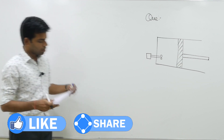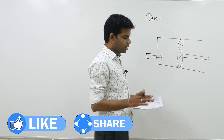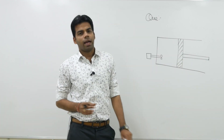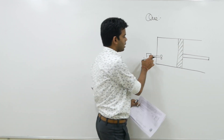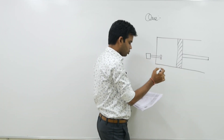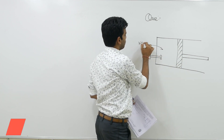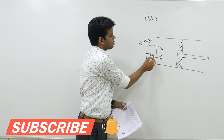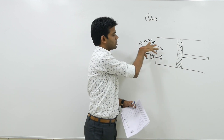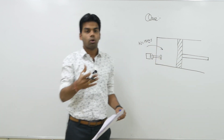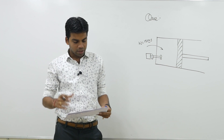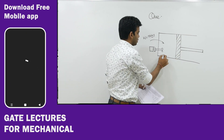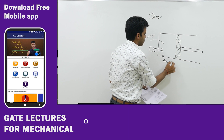So, what is the question saying? A fluid contained in a cylinder receives 150 kilojoule of mechanical energy by means of the paddle wheel. We have a piston-cylinder arrangement containing a fluid, and we are providing work of 150 kilojoule by means of the paddle wheel arrangement — this is rotating and doing work on the system. Along with this, 50 kilojoule of energy is also transferred in the form of heat, so Q is given as 50 kilojoule.